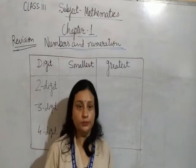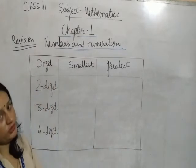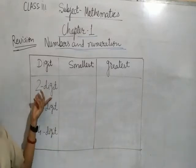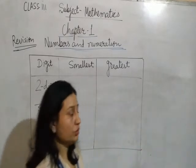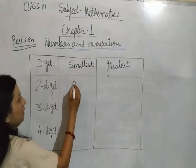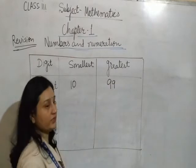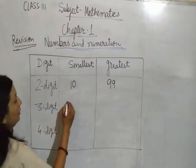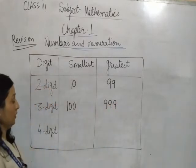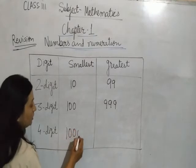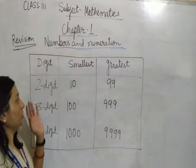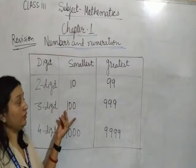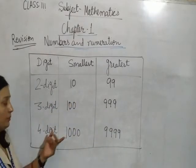Now let's discuss the greatest and smallest numbers by digit count. Here is a table. For 2-digit numbers: the smallest number is 10 and the greatest number is 99. For 3-digit numbers: the smallest number is 100 and the greatest number is 999.